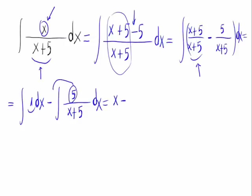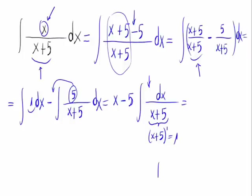Take away - from here you take out this 5 - and we can observe now we have a first degree polynomial in the denominator whose derivative is 1, and we have it in the numerator.